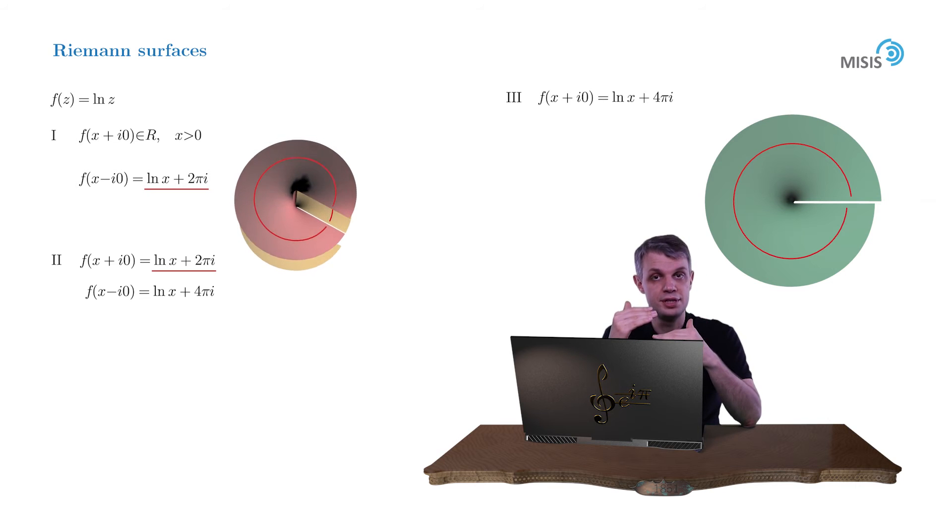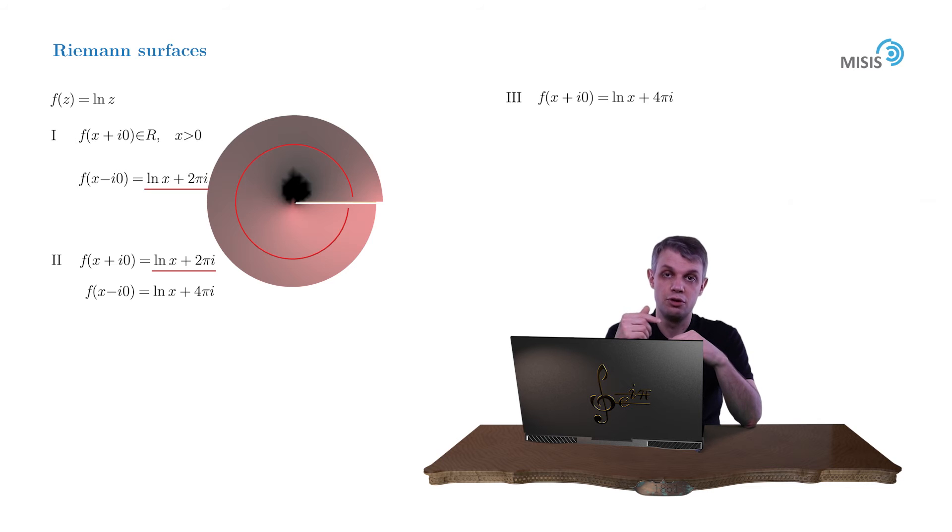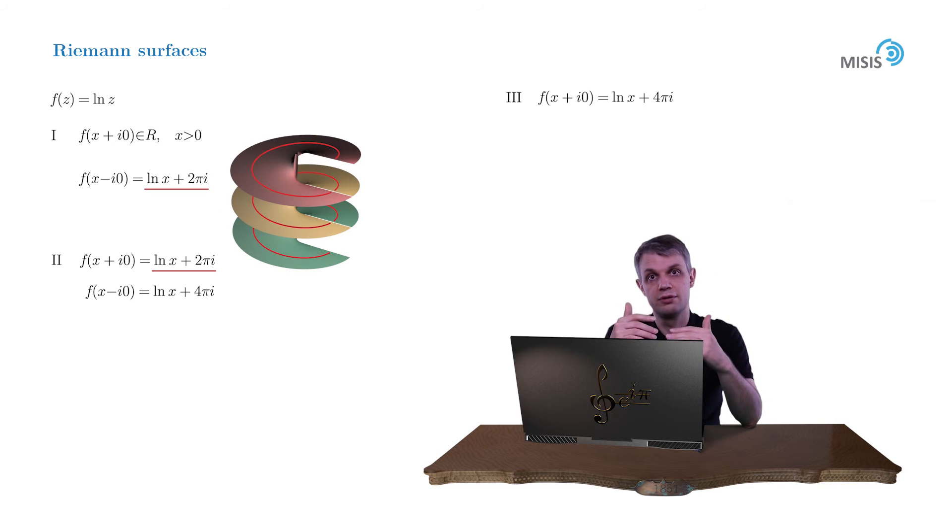And then we may repeat the same procedure with the second and third complex planes. Again we glue the lower bank of the branch cut of the second plane with the upper bank of the branch cut of the third plane. And this time we arrived at the three-plane structure which is capable of accommodating the values of three regular branches of our multivalued function.